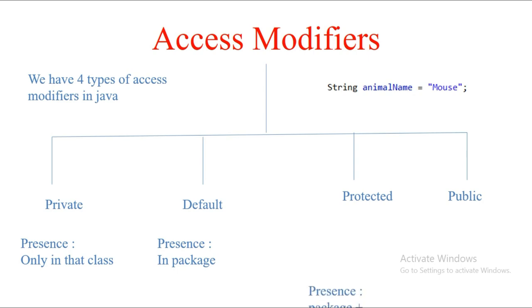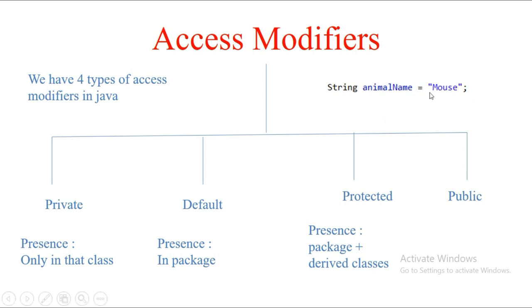The third one is protected. The visibility of 'animalName' if made protected will remain in that particular package, but also extends to all subclasses, whether in the same or different packages, of the class in which the variable is defined. I'll explain it with an animation in the next slide. For public access modifiers, the presence remains everywhere — the complete project scope becomes the visibility area.